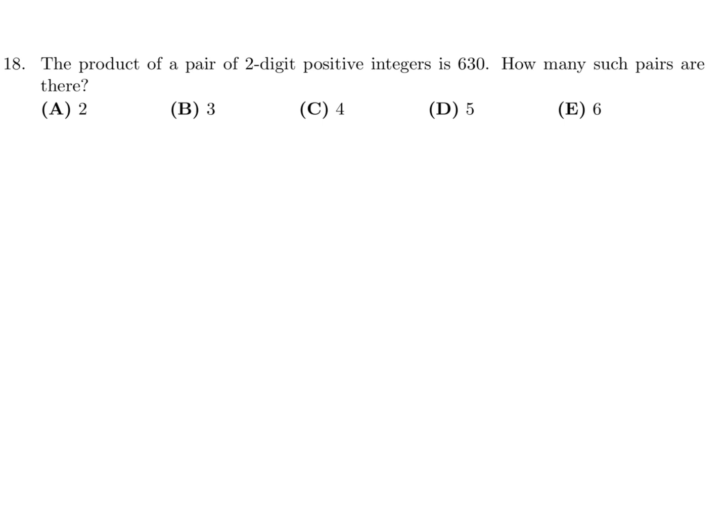The product of a pair of two-digit positive integers is 630. How many such pairs are there? First, 630 = 2 × 3 × 3 × 5 × 7 by prime factorization. We want pairs of two-digit numbers whose product is 630, so let's go through the possibilities manually.